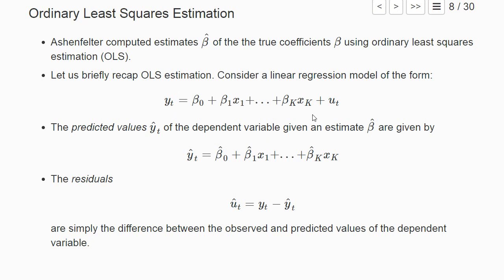We basically replace the betas by our estimates and set the error term u to zero, and then we get a prediction y hat for every observation.